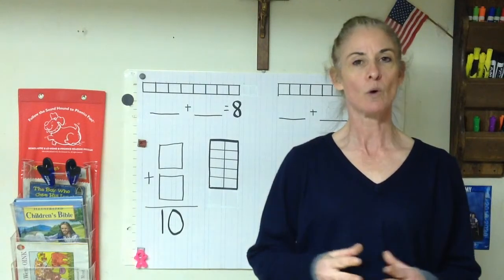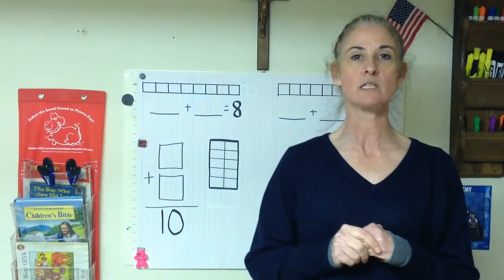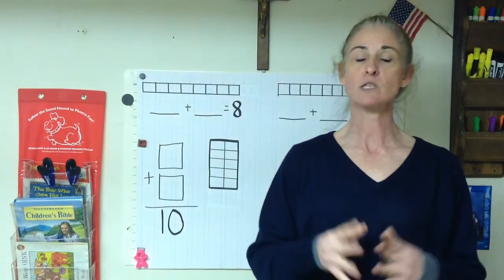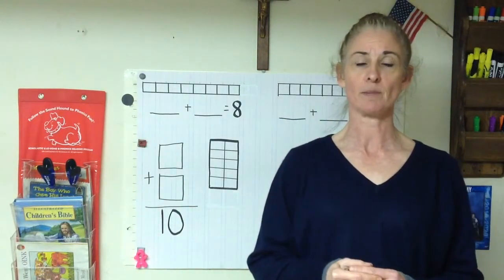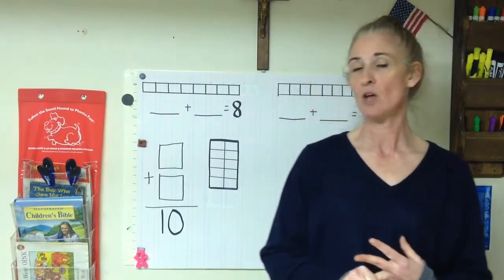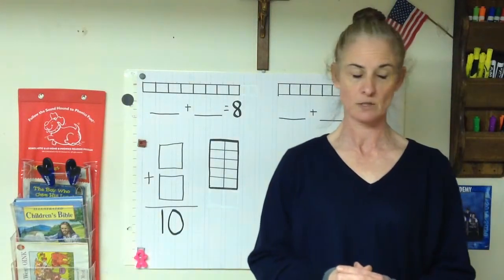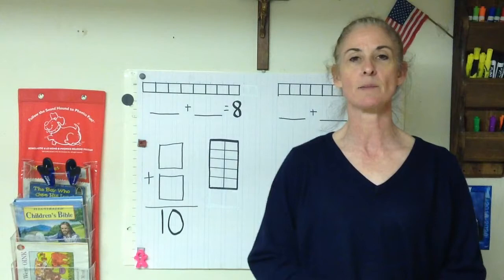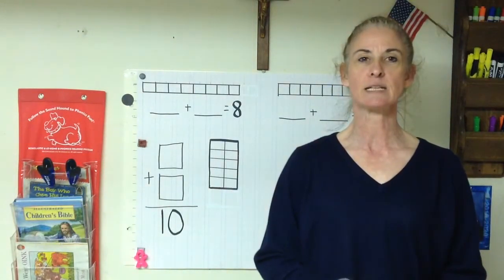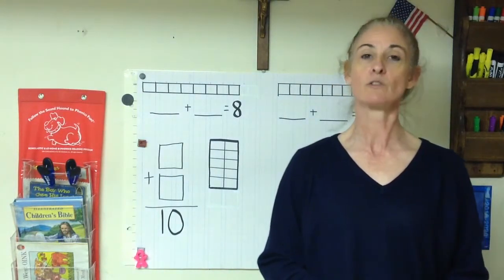Very good. We also learned that we can write an addition sentence horizontally, going across, or vertically, going up and down. Good. We've also learned to solve addition problems different ways. We've used our cubes, we've used our ten frames, we used the number line. And today you're going to practice all of those different ways that we learned. Because often when you learn something in math, you practice it. The best way to understand it and to get good at it is through practice. And it's always good to know different ways to do things.